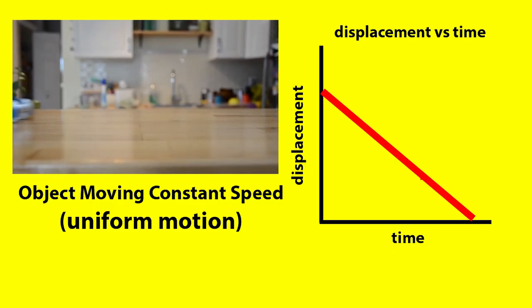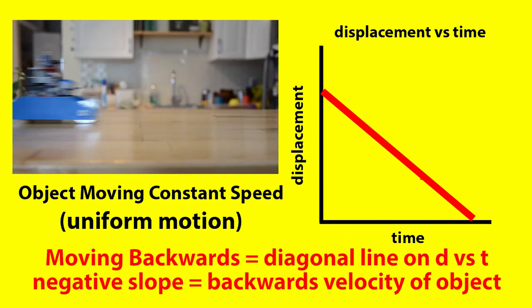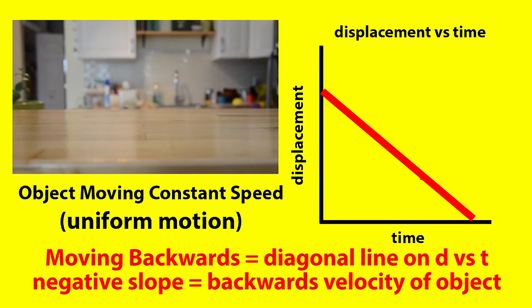What about an object going backwards? Well, if the object's going backwards, then you're going to see a diagonal line again, but now it's going to be going downwards. The slope is a negative.